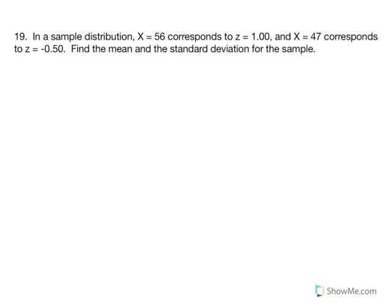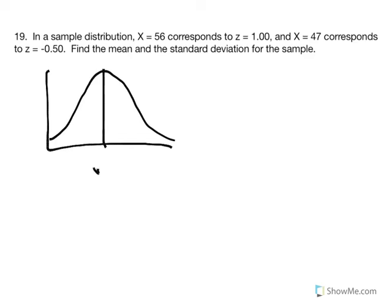Number 19: in a sample distribution, x equals 56 corresponds to z equals 1, and x equals 47 corresponds to z equals negative 0.5. Find the mean and standard deviation for the sample. Visually, we have a distribution where the mean is unknown. One standard deviation above gives a score of 56, and 0.5 standard deviations below gives a score of 47.